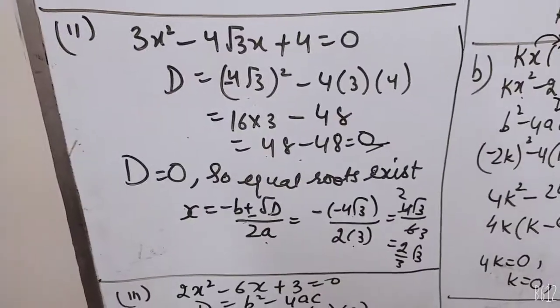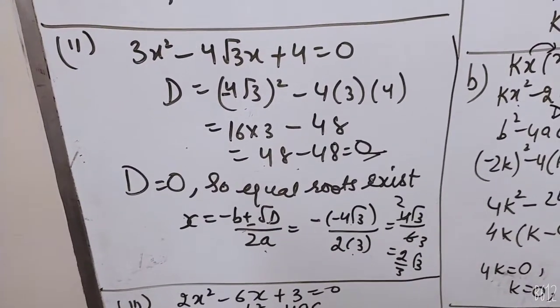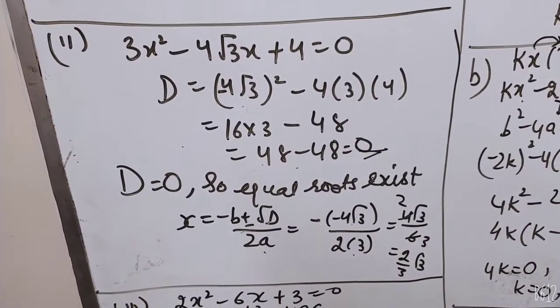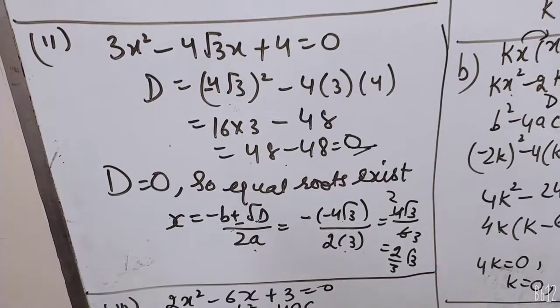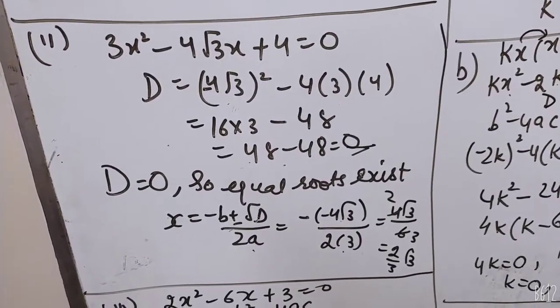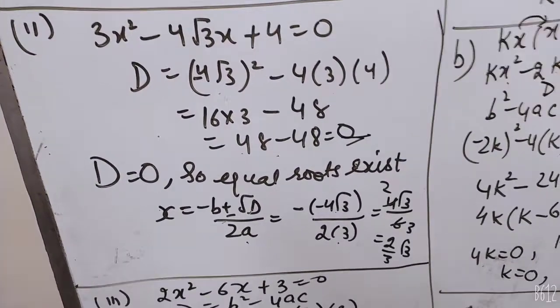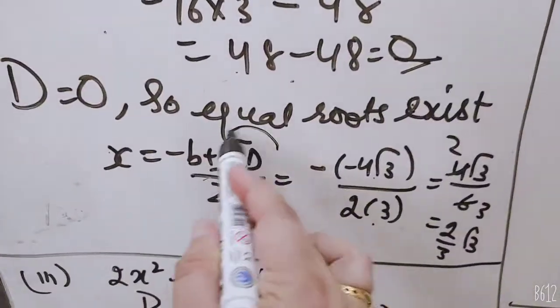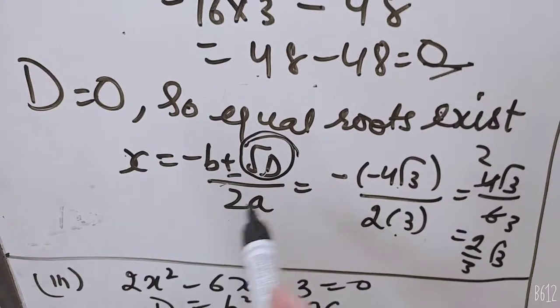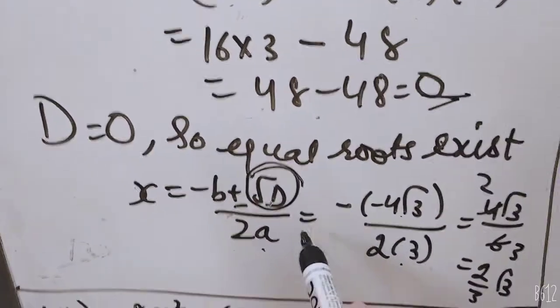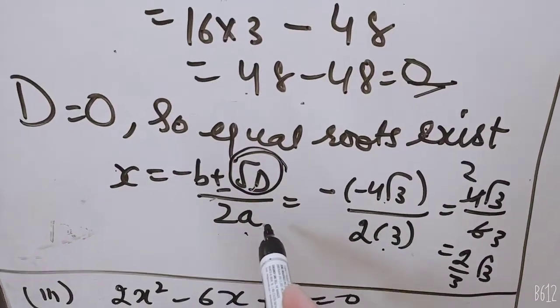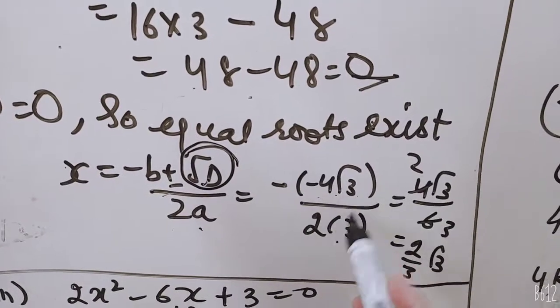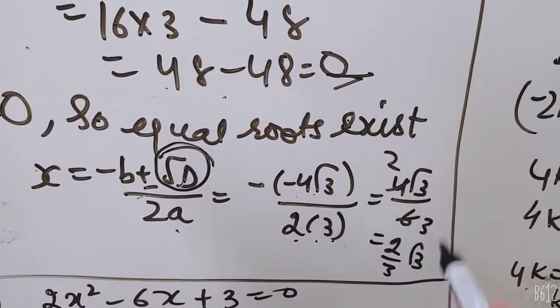Second part, 3x squared minus 4 root 3x plus 4 is equal to 0. First, find D. Minus 4 root 3 squared minus 4 into 3 into 4. It is 16 into 3 minus 48. 48 minus 48 is 0. If D is 0, then equal roots exist. So now write the roots using minus b by 2a. Because D value is 0.